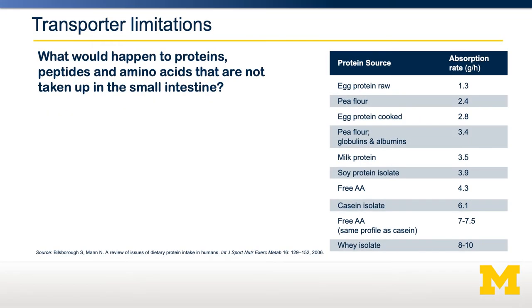There are several limitations to protein digestion and transport. First, the breakdown of proteins varies depending on denaturation in the stomach and the accessibility of peptide bonds to proteases. Because dietary proteins vary so much, different proteins have different absorption rates. For example, whey isolate is absorbed very quickly — 8 to 10 grams per hour — because it is easily broken down, easily denatured, and amenable to our proteases. Egg protein, especially raw egg protein, is absorbed much slower because it is harder to denature and harder for enzymes to access peptide bonds, making egg protein absorption rates perhaps tenfold less than whey.